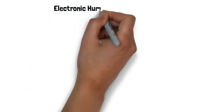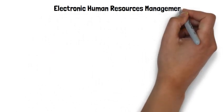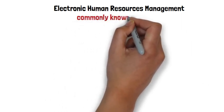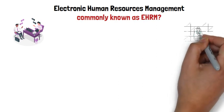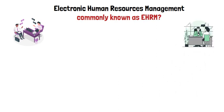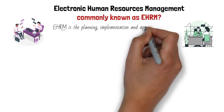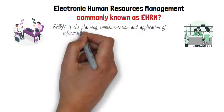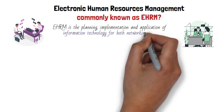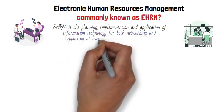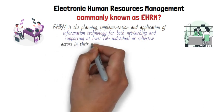Welcome. In today's episode we want to discuss electronic human resources management, commonly known as EHRM. We will start by explaining what EHRM is. EHRM is the planning, implementation, and application of information technology for both networking and supporting at least individual or collective actors in their shared performing of HR activity.